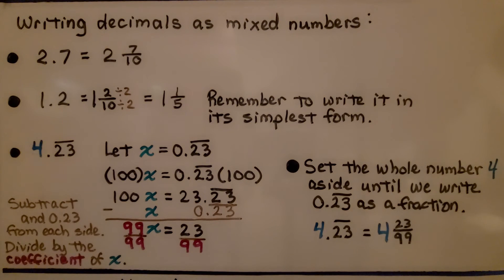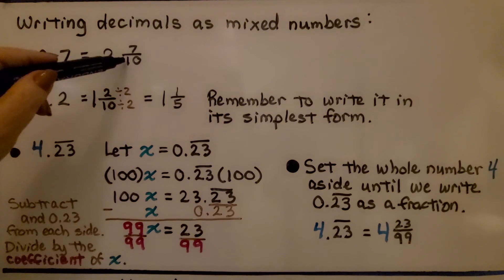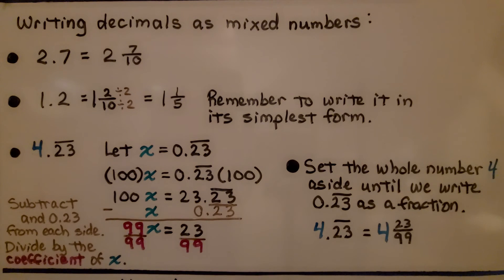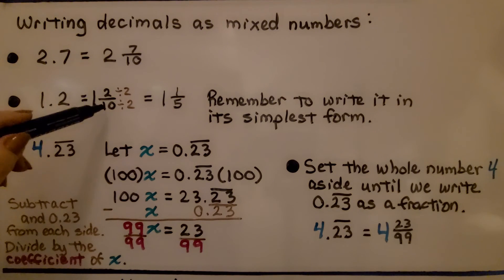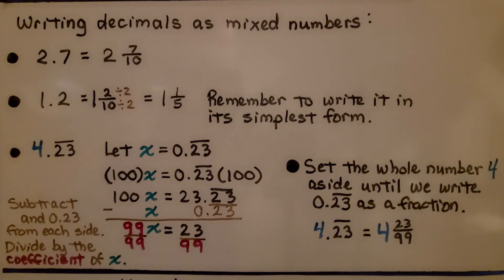For writing decimals as mixed numbers, here we have 2 and 7 tenths. We have 2 as our whole number and 7 tenths as the fraction part. Here we have 1 and 2 tenths. We have 1 and 2 tenths. And we can simplify this by dividing the numerator and denominator by the greatest common factor, 2. We get 1 and 1 fifth. So, remember to write it in its simplest form.